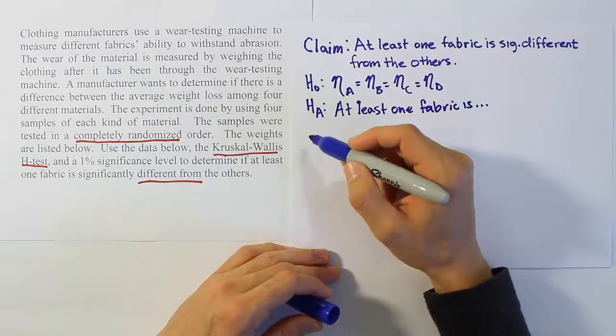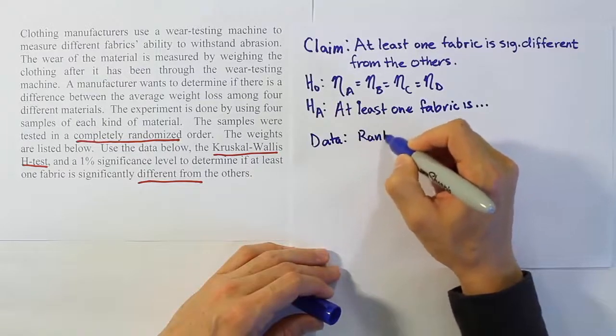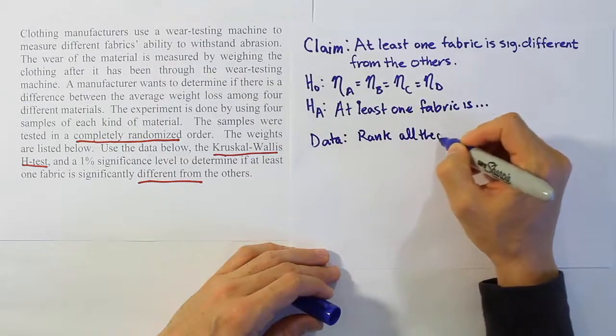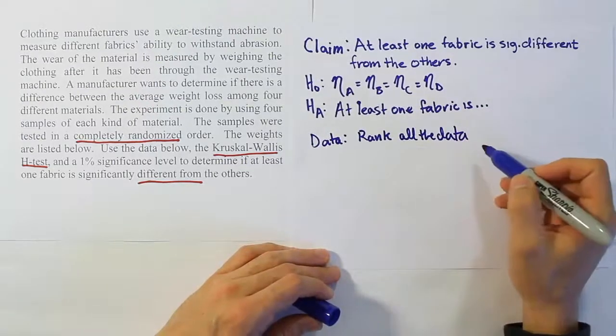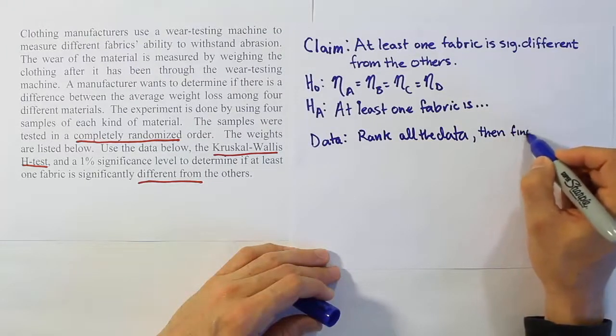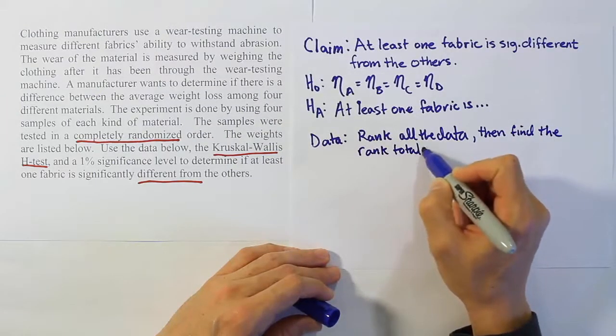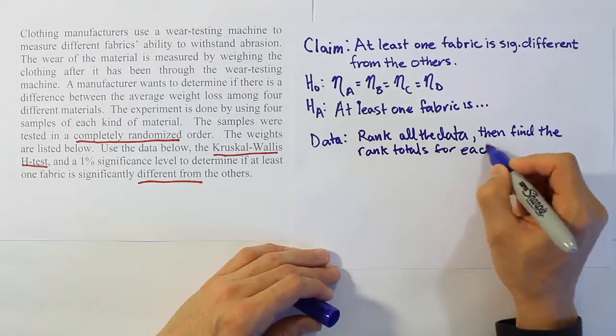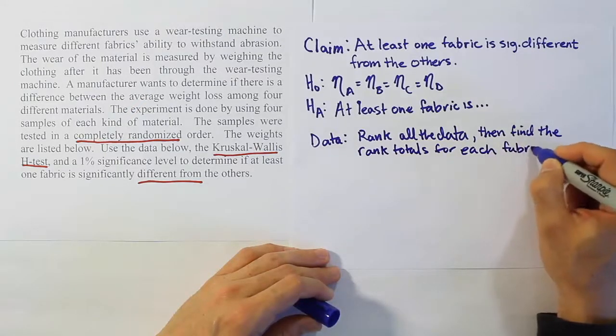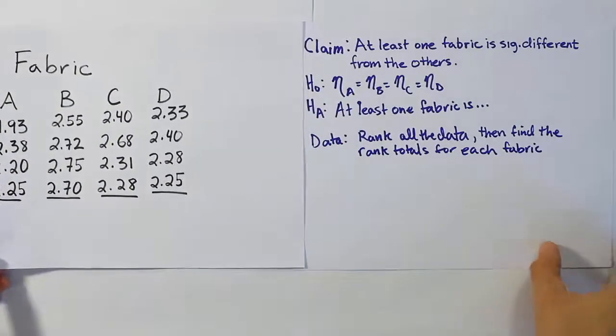Now, from there what we want to do is come up with a data step. The data step is going to involve us ranking all the data. So we're going to rank all the data first, then find the rank totals for each fabric.